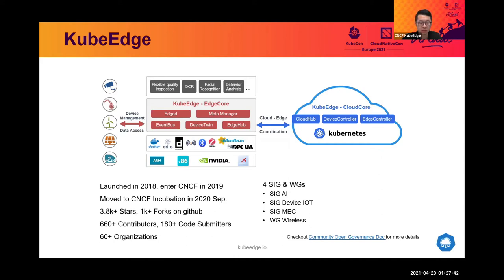Including around 200 code submitters from over 60 organizations. Since we last met, the community now has four SIGs and working groups, including the AI SIG, the Device IoT SIG, the MEC SIG, and the Wireless Working Group.